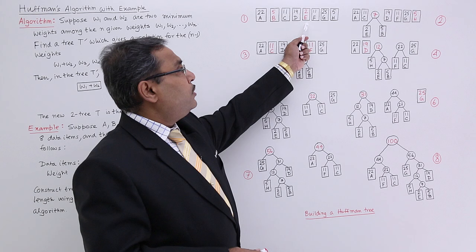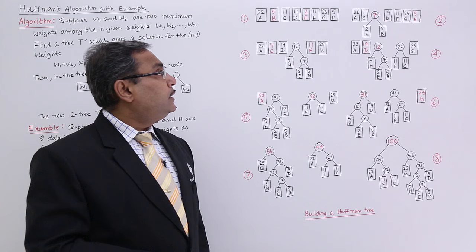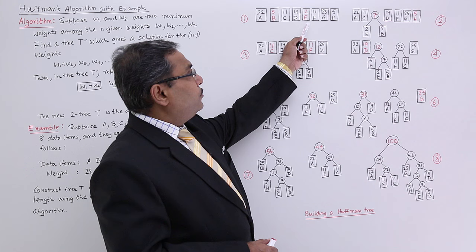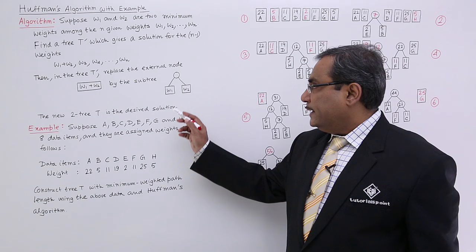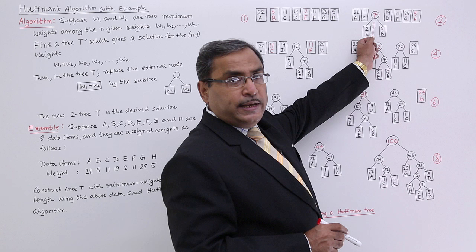Here they are 5 and 2. I could have taken this 5 also. Tie should be broken arbitrarily. So I have taken this 5 and this 2. Now this 5 and 2 will be added and I will be getting 7 and these 2 are the respective nodes will be there like this one. Now this 7 will be taken in the participation.